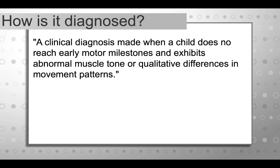So how is CP diagnosed? A clinical diagnosis of CP is made when a child does not reach their early motor milestones and also exhibits abnormal muscle tone or some qualitative differences in movement patterns. Even when a child experiences a known brain injury or hypoxic event at birth, the brain is extremely plastic and adaptable, and some of these children do not experience long-term effects and aren't diagnosed with cerebral palsy. Similarly, there are children diagnosed with CP where the brain event at birth is unknown — something must have happened in utero that wasn't discerned.